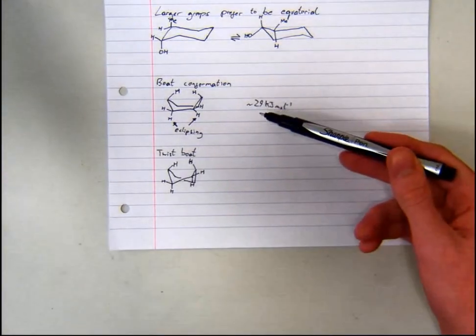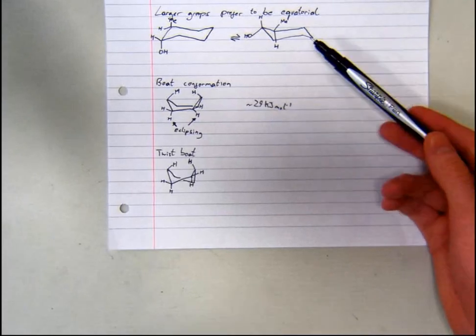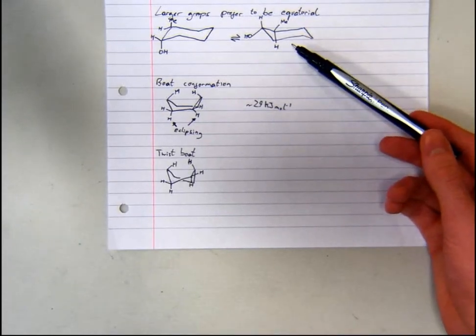This conformation is more stable than the boat, however it is still not as stable as the chair, which is the most favourable conformation for six-membered rings.